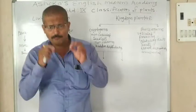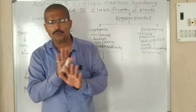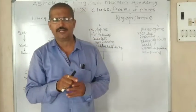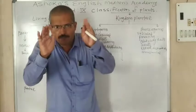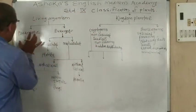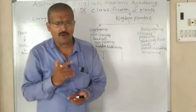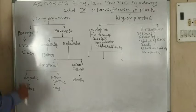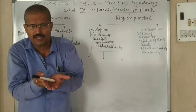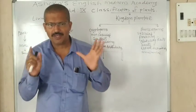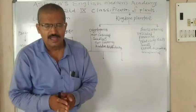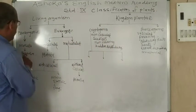Prokaryotic means where there is no true nucleus — the nucleus is present but nuclear organelles are not bounded with a specific membrane. So prokaryotic means nucleus without a nuclear membrane. The example of prokaryotic is the kingdom Monera, and its example is bacteria. Bacteria have a nucleus but they do not have a nuclear membrane.